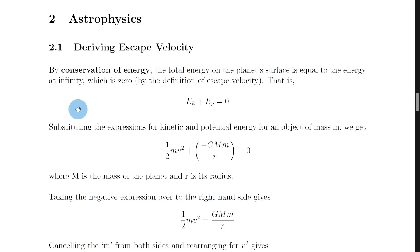And that means we can start off by saying that by conservation of energy, the total energy of the object on the planet's surface is equal to the energy at infinity, which is zero by the definition of escape velocity. So that means we can say the total energy, which is just the sum of the kinetic and potential energies at that point at the planet's surface will be equal to zero joules.